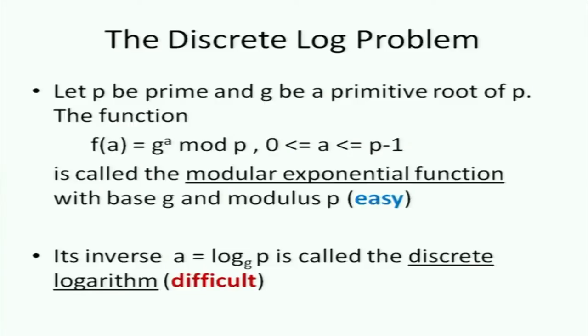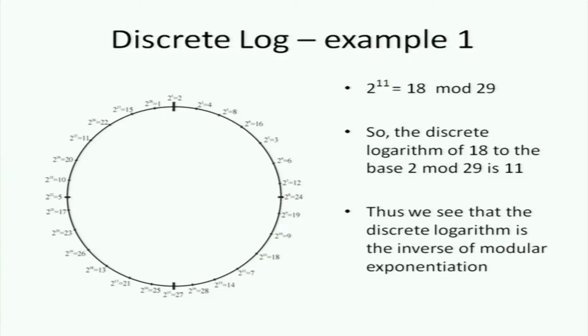Modular exponentiation is not very difficult because there are clever ways to make it fast. On the other hand, the discrete log problem is supposed to be infeasible — not just over any group, but over very large specific groups. For example, taking elements 1 to 28 with multiplication modulo 29: 2^1=2, 2^2=4, 2^3=8, 2^4=16, but 2^5=3, because it's all modulo 29.